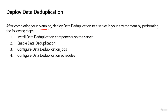Once you've completed all the planning, we can move on to the actual deployment. The first thing we have to do is install data deduplication — this is not installed by default. Once you install it, it still has to be enabled, so we will enable data deduplication. Then we will configure the jobs, define the schedule that we want this to run on, and that's it. Set it and forget it — not anything you actually have to configure again.